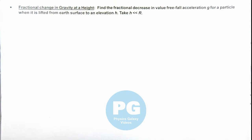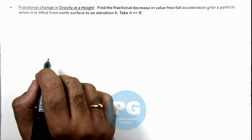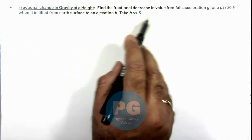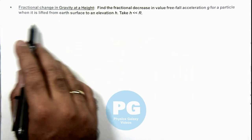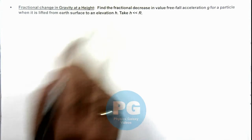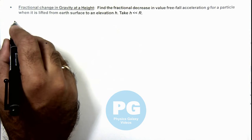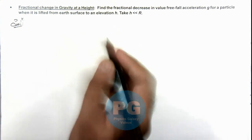In this illustration we'll discuss the fractional change in gravity at a height. We'll find the fractional decrease in value of free fall acceleration g for a particle when it is lifted from earth surface to an elevation h, where h is very small compared to R, the radius of earth.